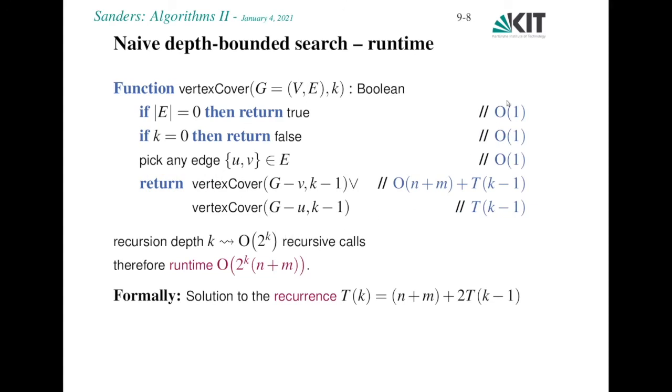Running time. These are simple constant time operations. Removing a vertex, let's assume that we have to rebuild the entire graph, so that would be order n plus m, where n is the number of nodes, m is the number of edges. We have a recursive call which has time T of k minus 1.